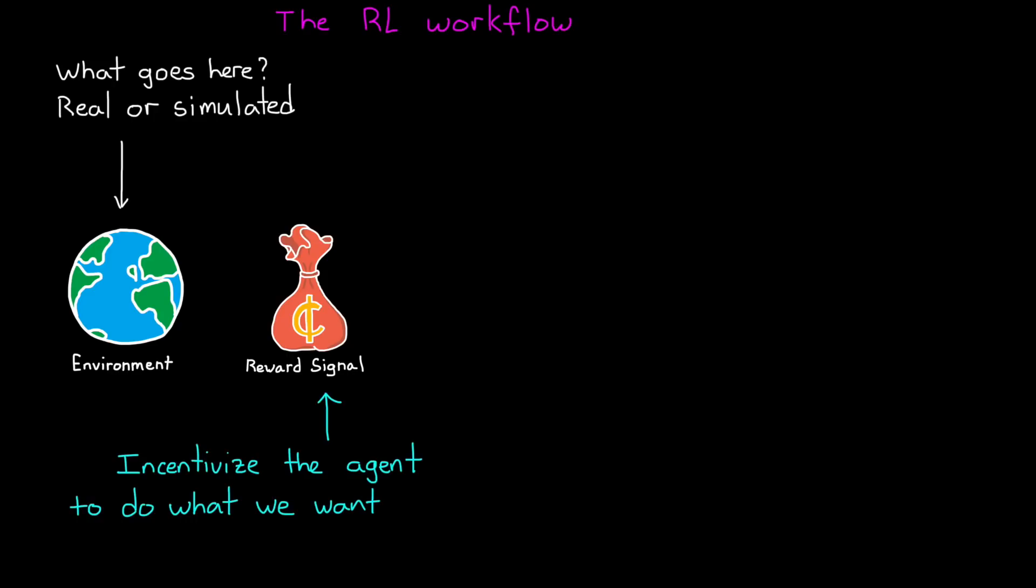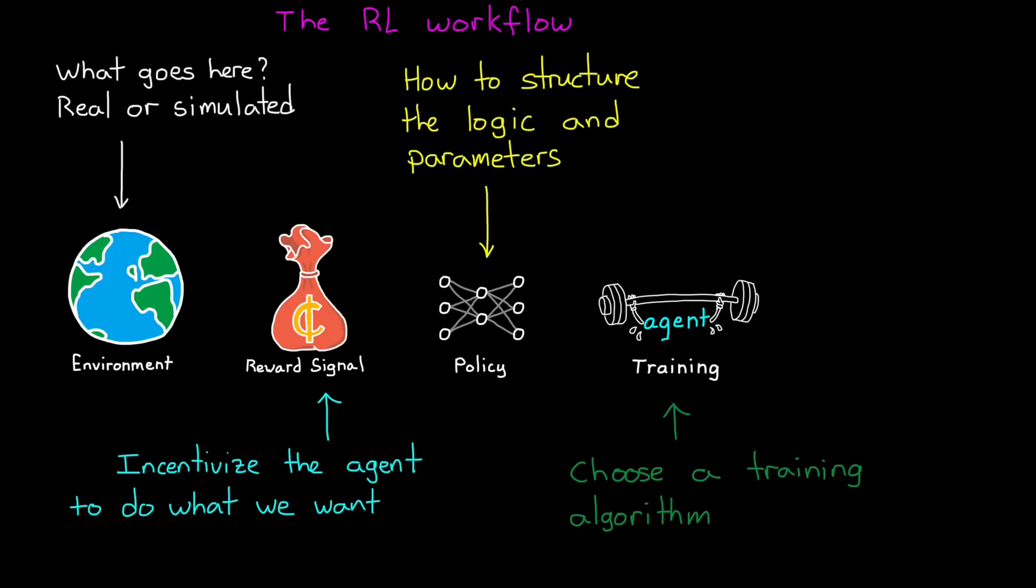First, we need an environment where our agent can learn, and therefore we need to choose what should exist within the environment and whether it's a simulation or a real physical setup. Then we need to think about what we ultimately want our agent to do and craft a reward function that will incentivize the agent to do just that. We need to choose a way to represent a policy, how we want to structure the parameters and logic that make up the decision-making part of the agent. And once we have this set up, we choose a training algorithm to get to work finding the optimal policy. Finally, we need to exploit the policy by deploying it onto an agent in the field and verifying the results.